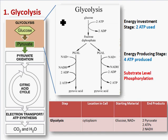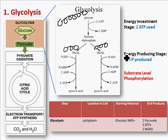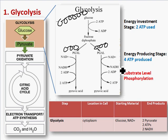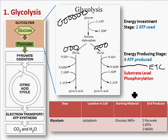The second phase of glycolysis is called the energy production stage. Here we produce four ATP and also create electron carriers — NADH. During this phase there's a redox reaction: NAD+ grabs electrons and becomes NADH. Overall we create four ATP, but we already used two, so our net production of ATP is only two ATPs.